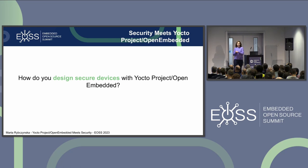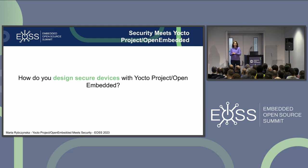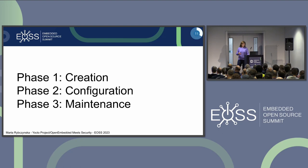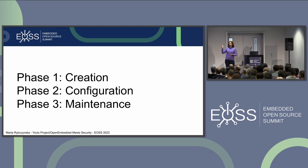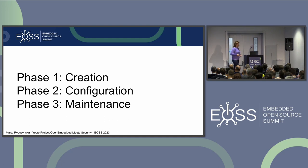How do you design secure devices with OpenEmbedded and the Yocto project? This will be a non-exclusive set because I have only 40 minutes, but I am going to share with you the most important things from my experience. I will divide my techniques into three phases: phase one is when you are creating your device and designing it; phase two is the development and configuration phase; and phase three is the life cycle — the maintenance after it is out in the field.